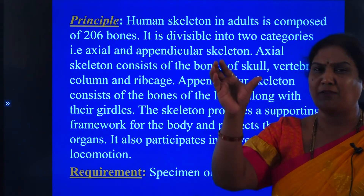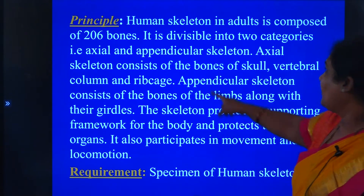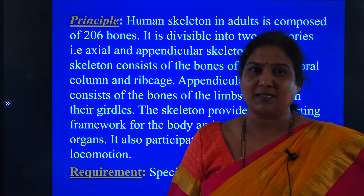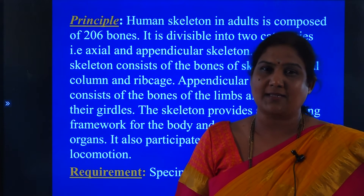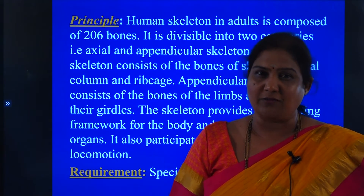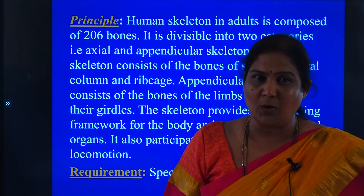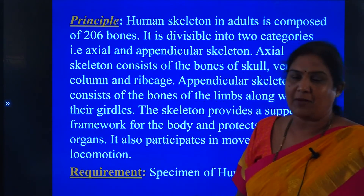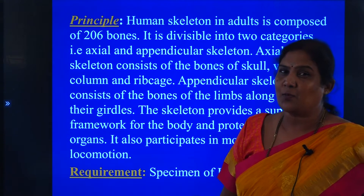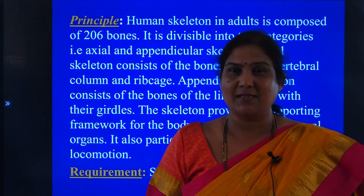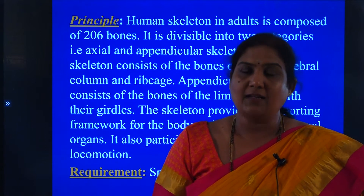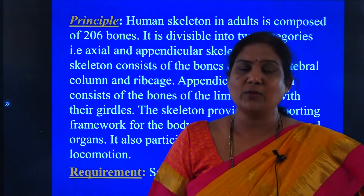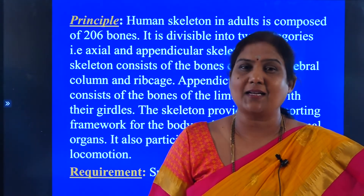The human skeleton in adults comprises 206 bones, whereas in small children the number of bones is around 300. So 206 bones are available in the human adult skeleton, whereas in the small child it would be around 300 bones. Why such a difference? Because in small children, the bones would not have been articulated or fused with each other — slowly they start fusing.